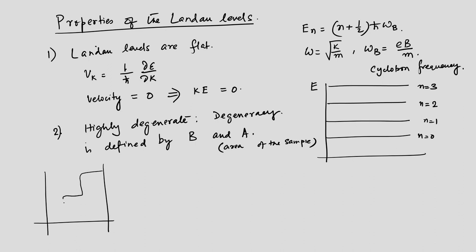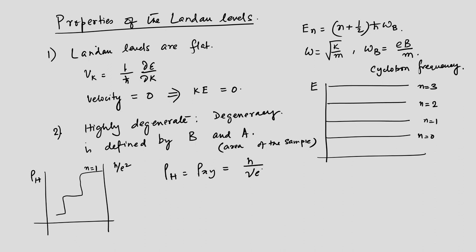The Hall resistivity ρ_H — same as ρ_xy, the transverse resistivity — is h/(νe²), where ν = 1, 2, 3, and so on. This ν is related to the degeneracy in the following way: ν = n₀ / (g/A), where n₀ is the electronic density. The degeneracy per unit area g/A equals eB/h.